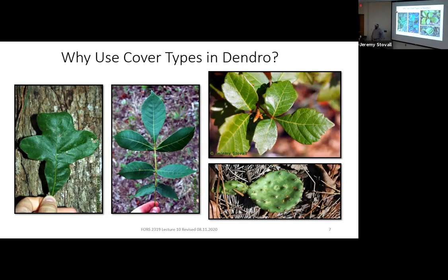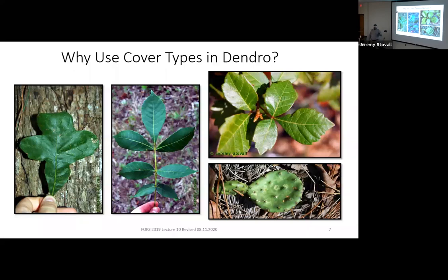Cover types will also be pretty helpful in dendrology, because if you know some of these cover types, some of them hold together really well. If I go out and I can see that I've got post oak, then when I look over here — what's my genus, what's my family? Juglandaceae, Carya. So you know that's a hickory. It's a hickory with seven leaflets — that could be shagbark, that could be mockernut. But you see it growing on a post oak site, and there's a pretty good bet that's going to be black hickory, Carya texana, which we're going to learn next week.